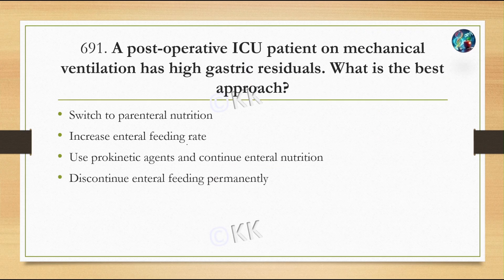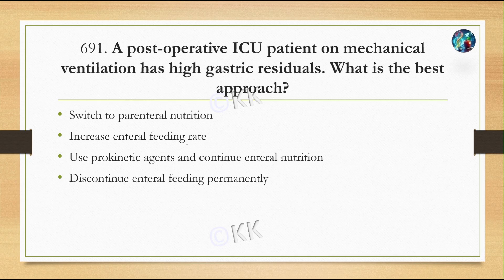Let's look at the first question. A post-operative ICU patient on mechanical ventilation has high gastric residuals. What is the best approach? Option A: switch to parenteral nutrition. Option B: increase enteral feeding rate. Option C: prokinetic agent and continuous enteral nutrition. Option D: discontinue enteral feeding permanently.